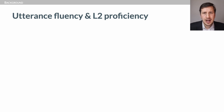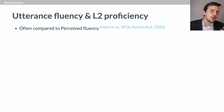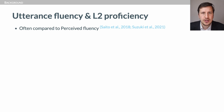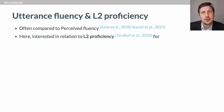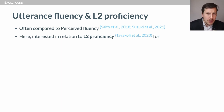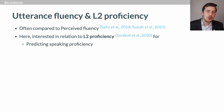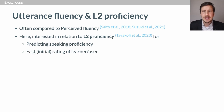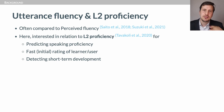Our first question is how utterance fluency relates to proficiency. In the literature it is often compared to perceived fluency, and on this topic I recommend Suzuki, Kormos and Ushihara's meta-analysis from this year. But here we are only going to look at how fluency can predict or be linked to proficiency. We want to predict speaking proficiency, have a fast initial rating of a learner in cold start situations, and monitor short-term development in fluency and proficiency.